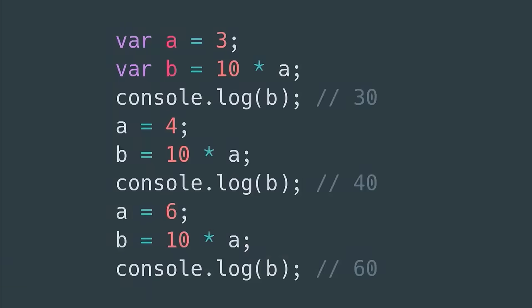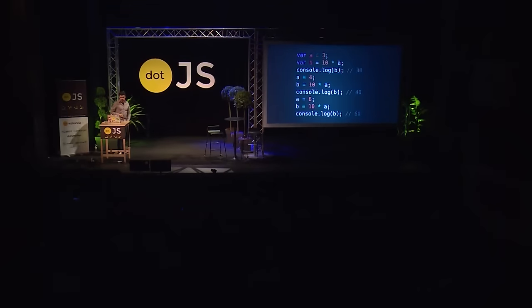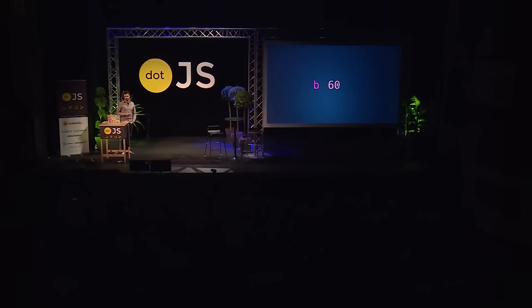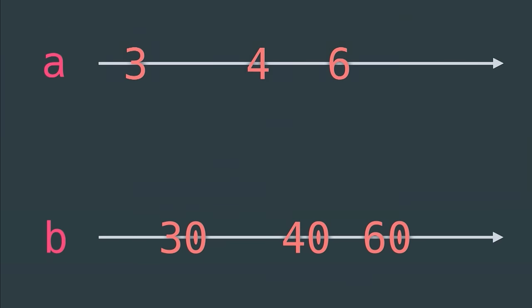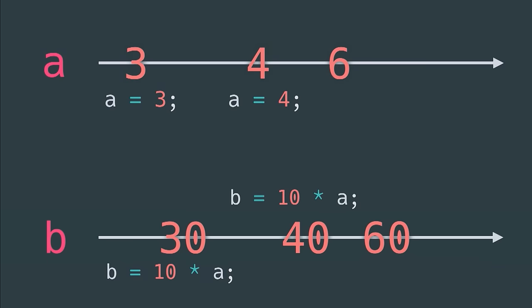Spreadsheets are the world's most successful programming environment for non-programmers. And why is that? Well, they don't need to worry about state, they don't need to think about mutation. All they have is data, formulas, and automatically updating dependencies. So how can we get JavaScript to have a bit of these properties? Whenever we set A, we need to also set B — we need to manually recalculate it. If you look at the value of B over time, it starts at 30 and then changes to 40 and 60, and these values depended on the values of A plotted in time.